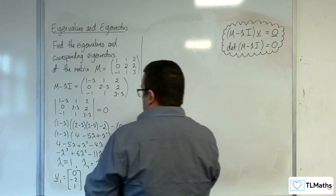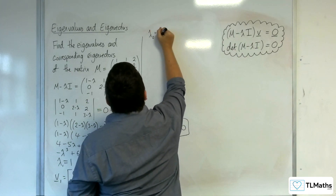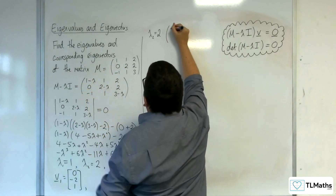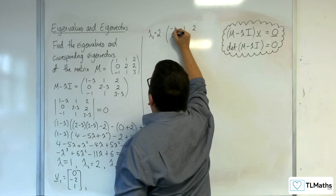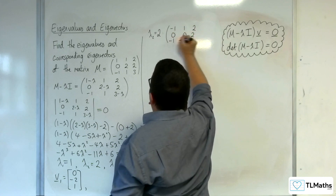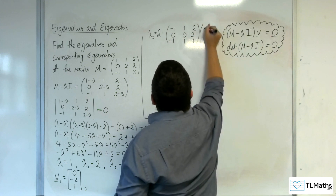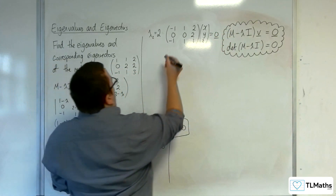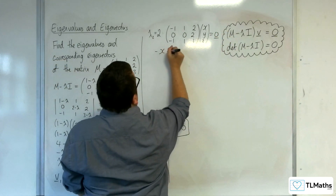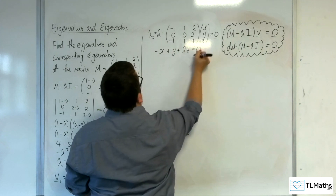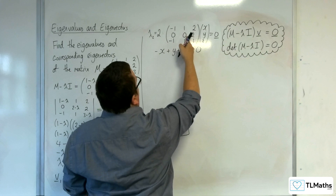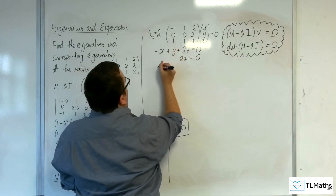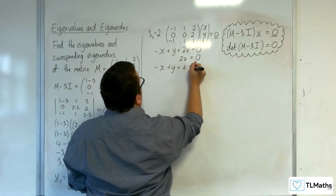For λ₂ = 2, substituting into the matrix gives: -1, 1, 2; 0, 0, 2; -1, 1, 1. Multiplying with (x, y, z) gives the equations: -x + y + 2z = 0; 2z = 0; and -x + y + z = 0.